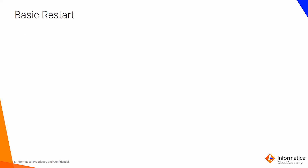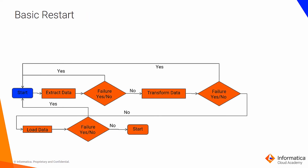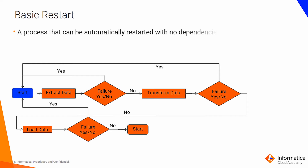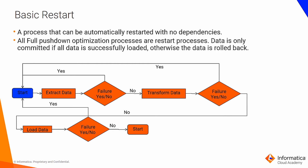The basic restart process is designed to have no intervention and can be automatically restarted with no dependencies. All full pushdown optimization processes are restart processes — data is only committed if all data is successfully loaded; otherwise, data is rolled back. An example is a mapping utilizing full pushdown. The process flow is: extract data; if extraction fails, repeat; if not, transform data; if transformation fails, restart; if not, load the transformed data to target; if loading fails, restart the whole process; otherwise, the next process is started.